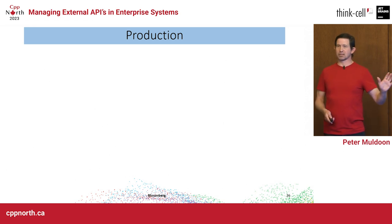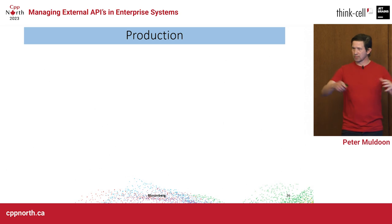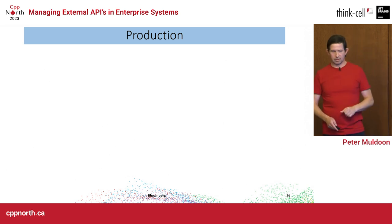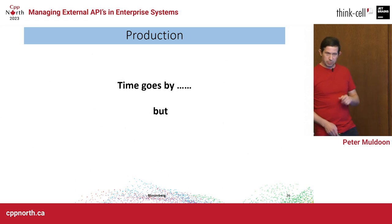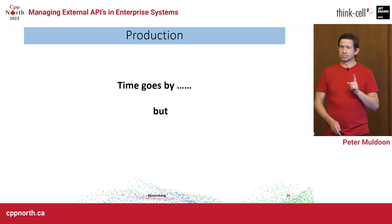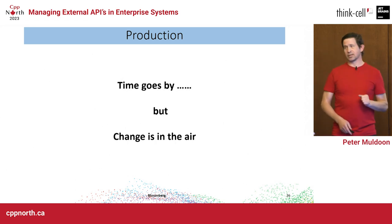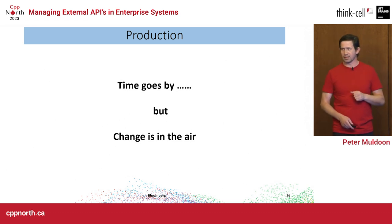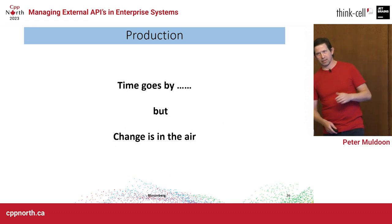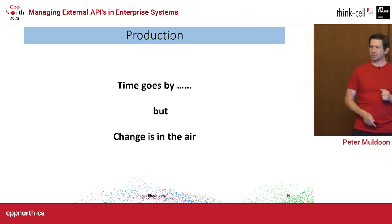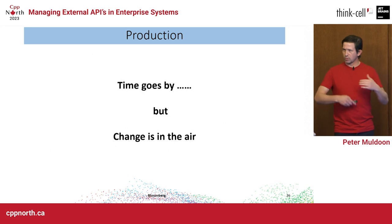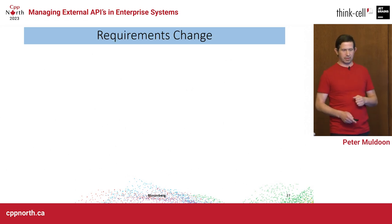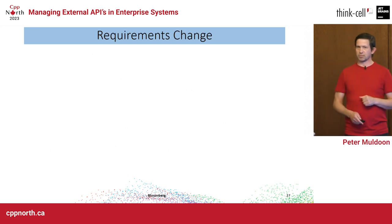Up to now we've set the stage: constrained an API, built our service, put it into production. Some production time goes by. But change is in the air — and unless you have a dying system, you will face change. As someone said this morning, change comes at you fast. This went into production for a couple of years, and then a big requirements change came in.